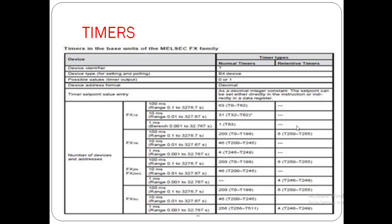The retentive timer, when it is turned off, retains its time value and starts exactly from the same time at which it was stopped. For example, if it is stopped at 100, it will remain at the 100 timing position, and when turned on again it starts timing from 100 and goes further. In this way you can study different kinds of timers.